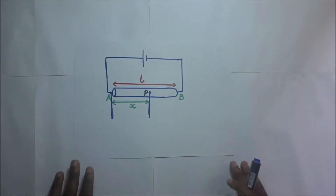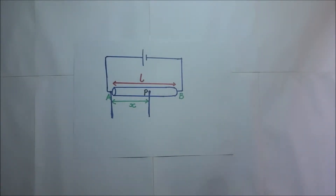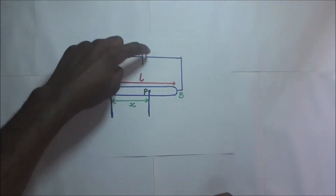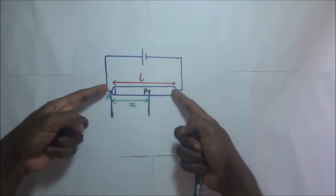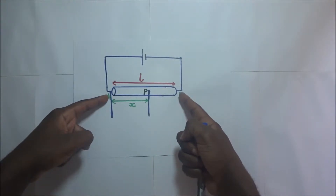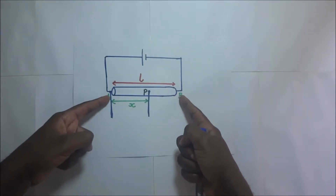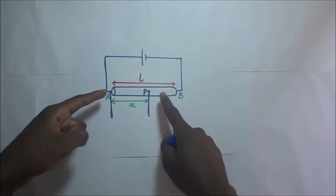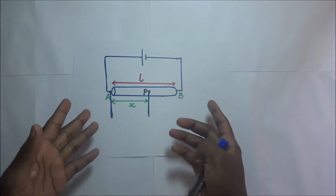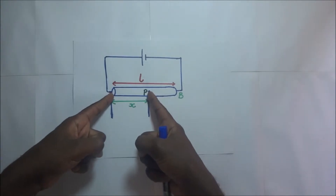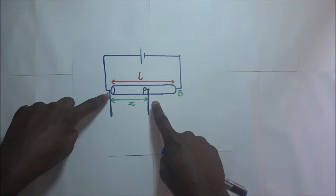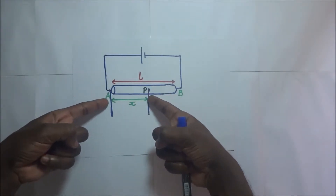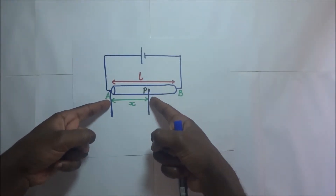Before us we have a circuit diagram. This circuit diagram has a source of EMF, which is a cell, and it is connected to a slide wire AB. This slide wire AB has its length L, and we are also interested in a portion of that slide wire which we have called AP, and that portion of the slide wire we are calling length X.